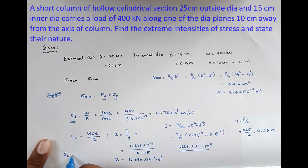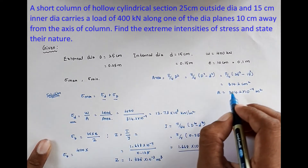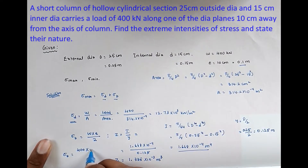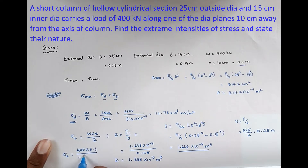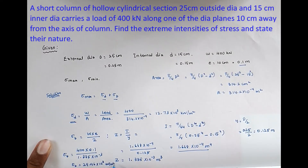Substituting into the bending stress formula: sigma_B = (400 × 0.1) / (1.335 × 10⁻³) = 29.96 × 10³ kN/m².